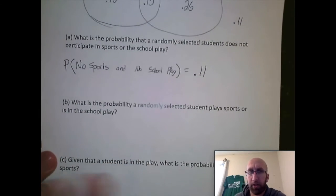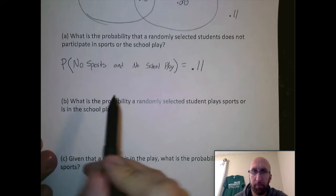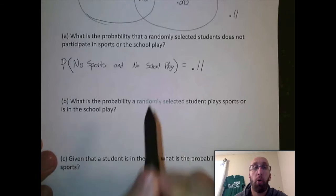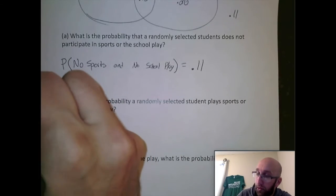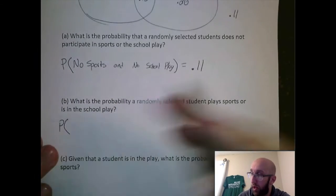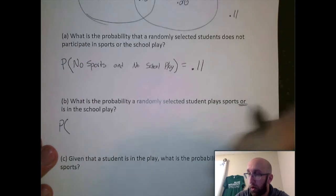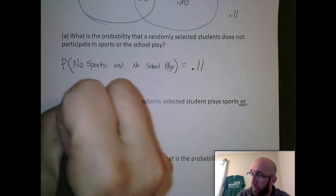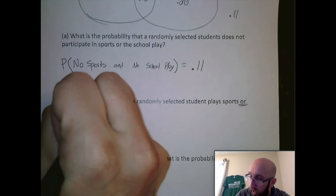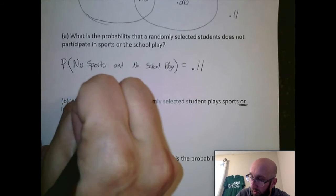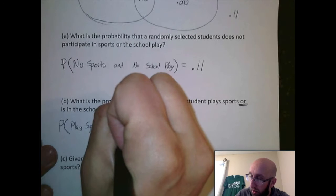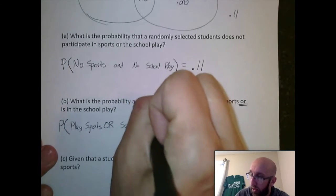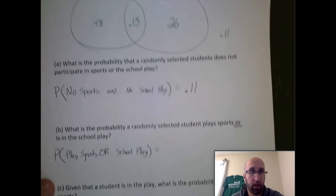My next question here is, what is the probability a randomly selected student plays sports or is in the school play? So let's start with notation. I do see my keyword of OR there, which makes me think about adding. So we're gonna say play sports or school play.